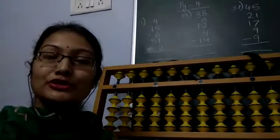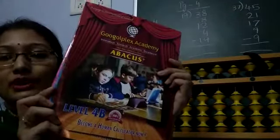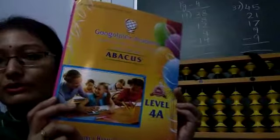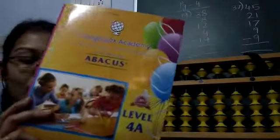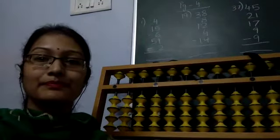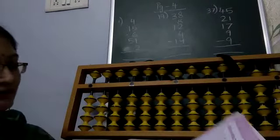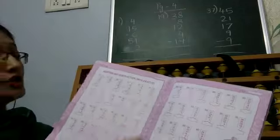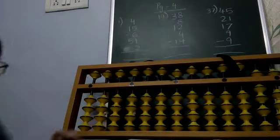Hello children, welcome to your abacus class, Class 3. We are going to do Level 4A and 4B. Level 4A is your classwork book and 4B is your homework book. I will refer to Level 4A questions — some will be done in class, the rest you will do yourself. The same pages will be done in your 4B books. Let's start with page number 4, which has the revision of the previous level: addition and subtraction with abacus.